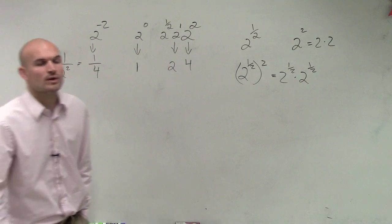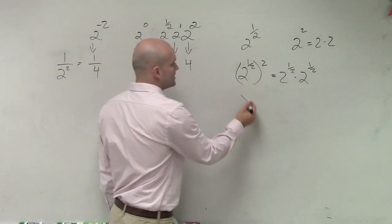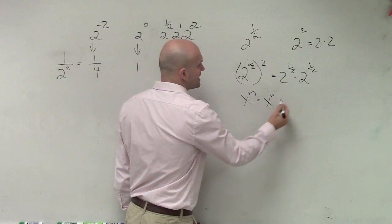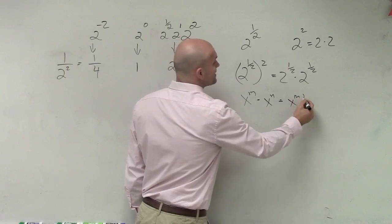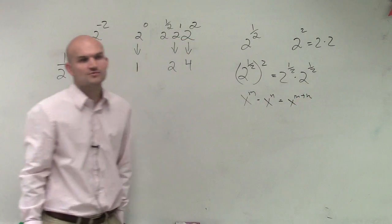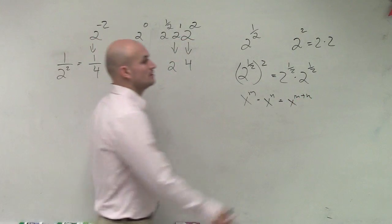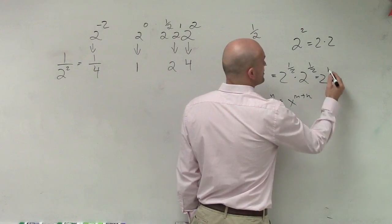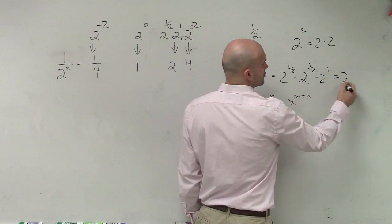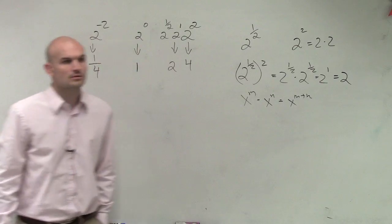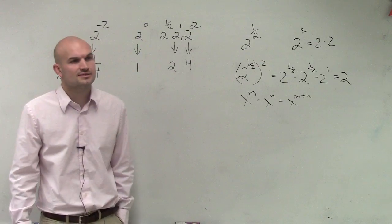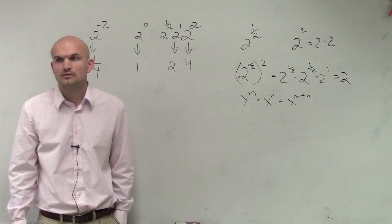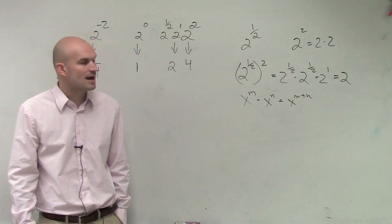And then what do you do when you have fractions? What happens when you have x to the m times x to the n? What do you do with the exponents? You add them. So what's 1 half plus 1 half? Equals 2 to the first power. 1 half plus 1 half is 1, so it's 2 to the first power.